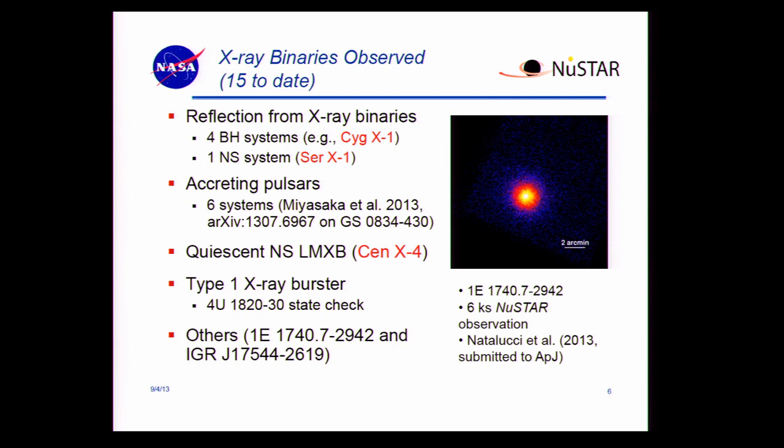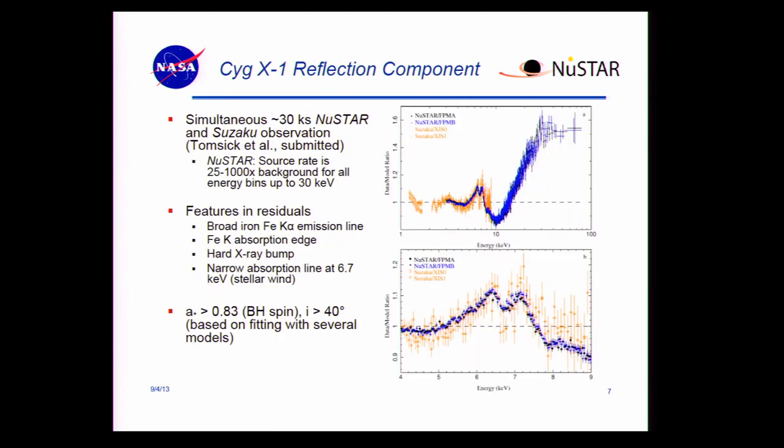I'm really just going to talk about three sources — the ones marked in red: Cyg X-1, Cir X-1, and Cen X-4.